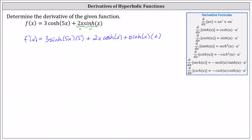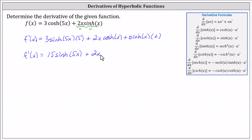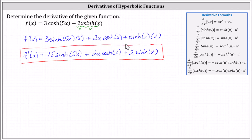Simplifying, we have f prime of x equals 15 hyperbolic sine five x plus two x hyperbolic cosine x, plus two hyperbolic sine x. I hope you found this helpful.